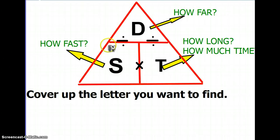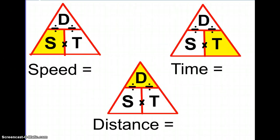Whenever you're using the DST triangle, all you got to do is cover up the letter that you want to find. If you want to find the speed of an object, cover up the S, and what we have left over is D over T. So the formula for speed is distance divided by time.